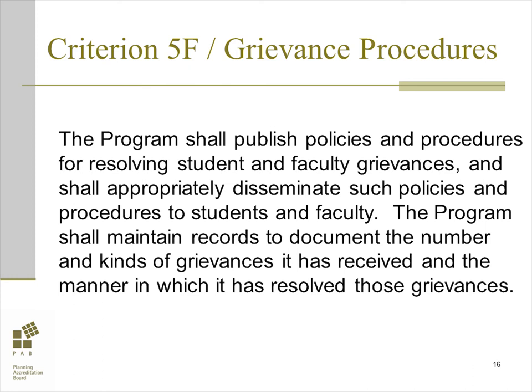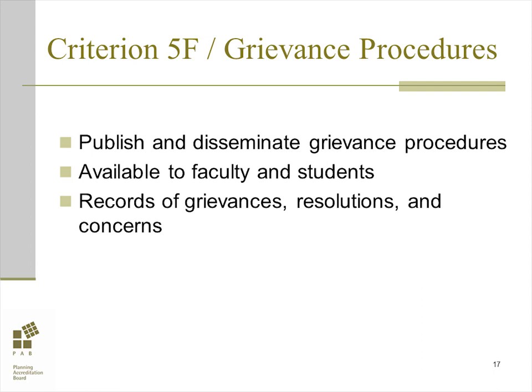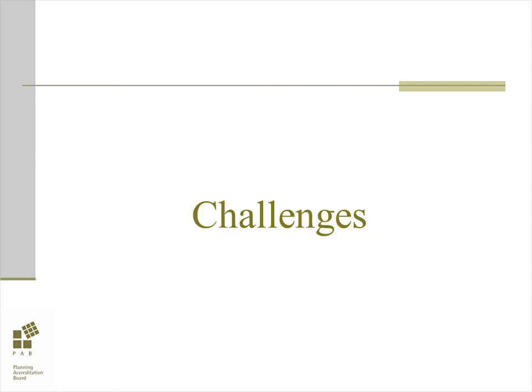Grievance procedures is the sixth criterion within the governance standard. Please pause the presentation to read this text. Students and faculty should have access to due process when they have grievances, and this process should be documented and provided to all potentially concerned parties. This criterion requires that programs publish and disseminate policies and procedures for resolving student and faculty grievances. Programs must also keep records of any grievances and their eventual resolution to demonstrate how an analysis of those records has led to identifying areas of concern and/or potential improvements. The following three examples describe situations that could be viewed as challenges to meeting this criterion: 1. A program has not fully disseminated grievance policies and procedures. 2. A program has not kept records of these types of instances. 3. A program has not thoroughly resolved a grievance.